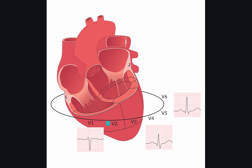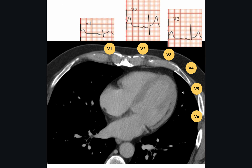If the R-wave progression is aberrant, this can either mean that there is early progression or late progression. You may already have a net positive QRS complex in V1, or it may not become positive until V6. There are several causes for this, which we'll discuss further, but here is an example of a patient with abnormal R-wave progression.